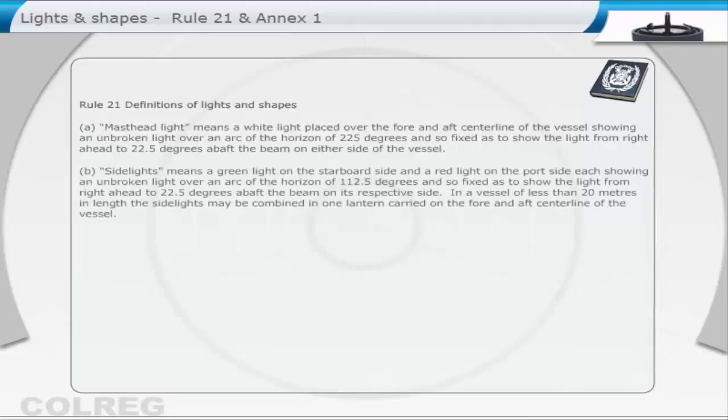Sidelights means a green light on the starboard side and a red light on the port side, each showing an unbroken light over an arc of the horizon of 112.5 degrees, and so fixed as to show the light from right ahead to 22.5 degrees above the beam on its respective side.